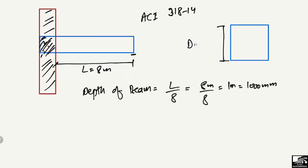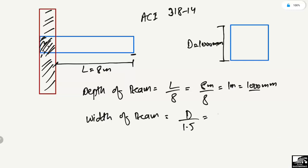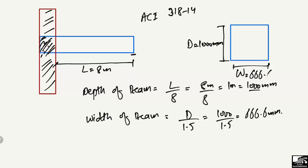To find the minimum width of the cantilever beam, we use the same formula: D divided by 1.5. Since the minimum depth is 1000 millimeters, 1000 divided by 1.5 gives 666.6 millimeters. So the minimum width for this cantilever beam is 666.6 millimeters.